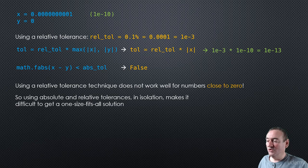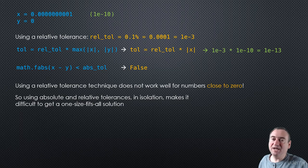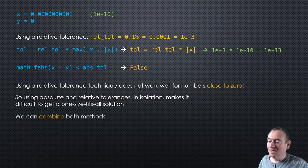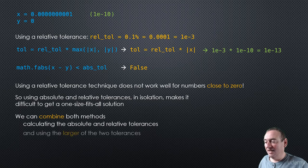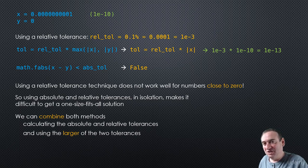So using absolute and relative tolerances in isolation — using either one or the other — makes it very difficult to get a solution that works uniformly across any number you might encounter as your program is running. So we can combine both methods; that's the better approach. We're going to combine both methods where we specify an absolute tolerance and a relative tolerance, and then use the larger of the two tolerances — the one further away from zero — and use that as our tolerance in our calculation.